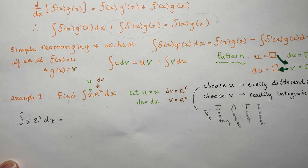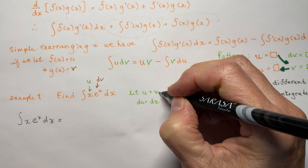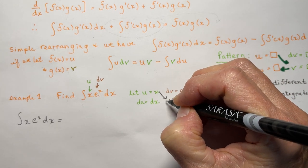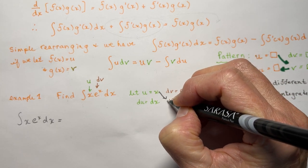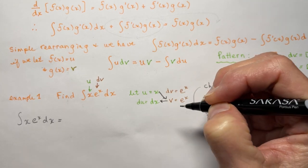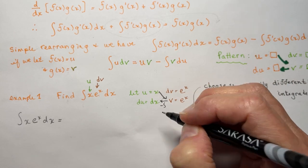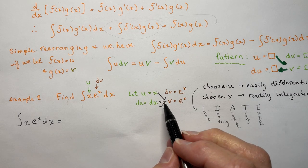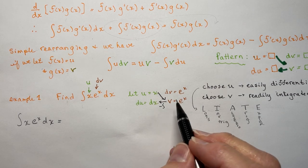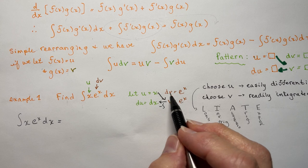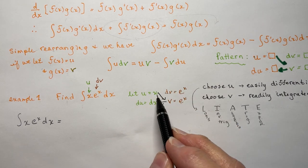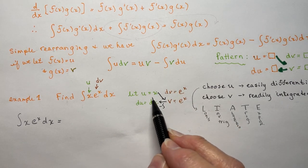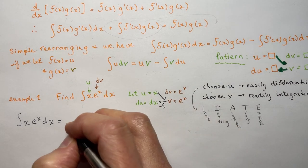So I'm going to do the integral of x·e^x dx. The pattern — like I said — we're going to make little arrows here. So I'm going to do this one times this one, minus the integral of those ones. So this is my integral part minus the integral. So I'm going to do x·e^x — that's uv on this diagonal.